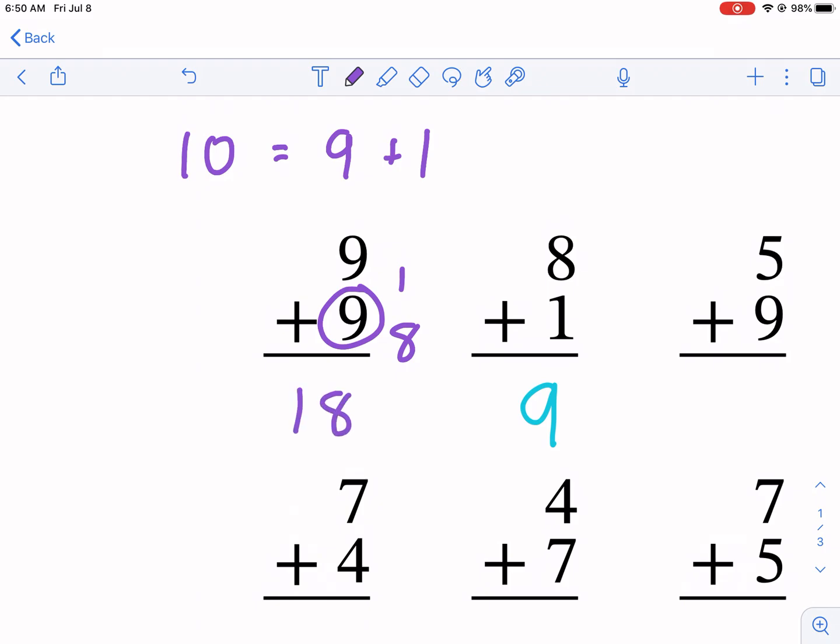So I know this is going to be 18. Nine plus one is 10, eight plus one is nine. So I have eight left over and I get 18 from that.